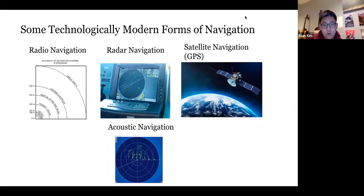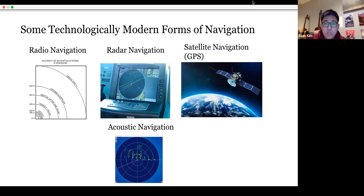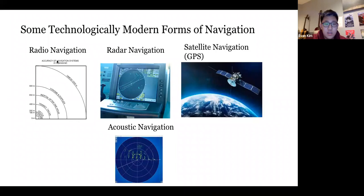Here are some technologically modern forms of navigation: radio navigation, radar navigation, satellite navigation, and acoustic navigation. Radar navigation uses the bouncing of radio waves off of objects beyond what the naked eye can see in order to gauge distance, and they can create computerized representations of these objects in the distance, as you can see on the screen here.